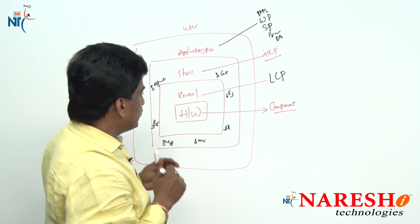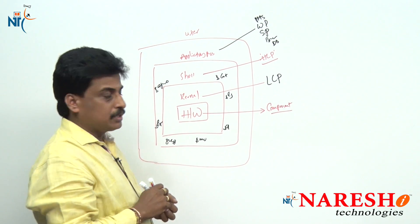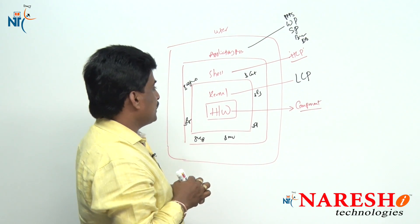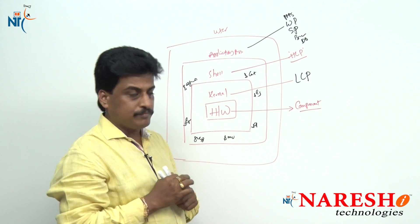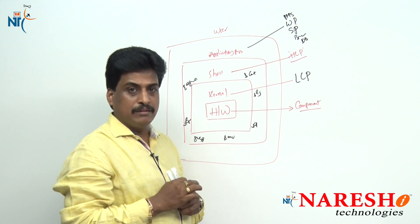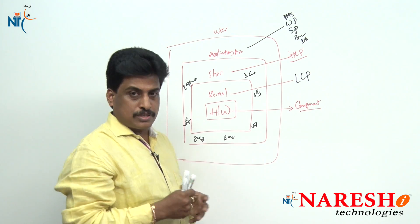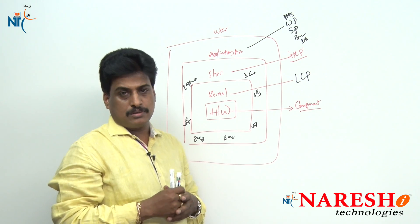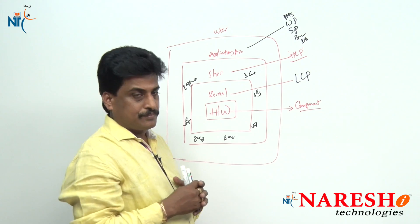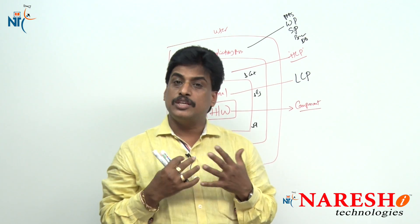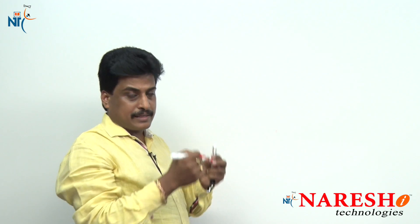This is the detailed architecture of Unix operating system: hardware is a physical component, kernel is low-level programming, shell is high-level programming, and application programs include word processors, spreadsheets, browsers, databases, etc. Next, we will try to observe the Unix file system. Unix file system structure is completely hierarchical based.